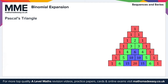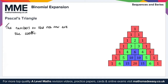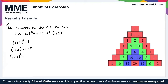The numbers on the nth row are the coefficients of (1+x) to the power of n. So if n equals 0, we get (1+x) to the power of 0, which equals 1. If n equals 1, (1+x) to the power of 1 simply gives us 1 plus x. If we have (1+x) all squared, that gives us 1 plus 2x plus x squared. We can see that from the third row we've got 1 plus 2x plus x squared.